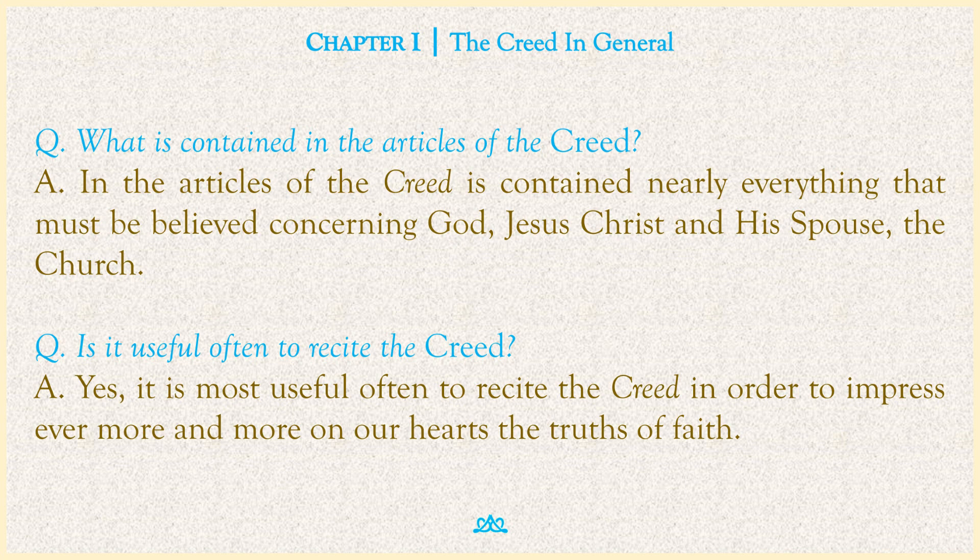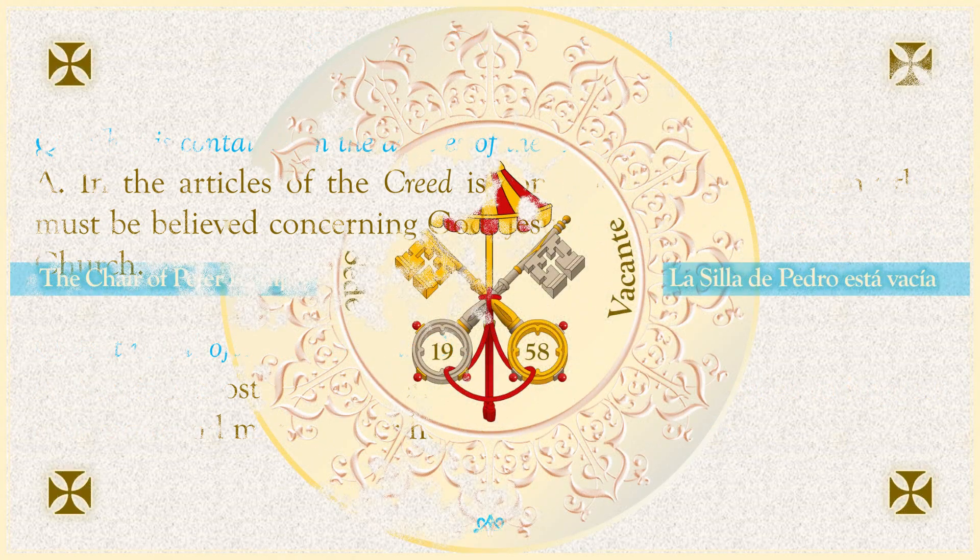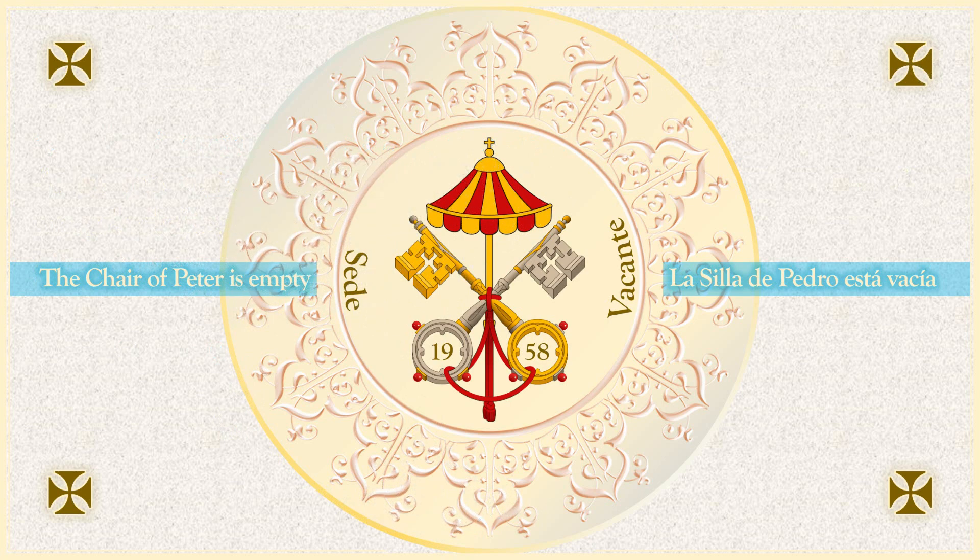What is contained in the Articles of the Creed? In the Articles of the Creed is contained nearly everything that must be believed concerning God, Jesus Christ, and His Spouse, the Church. Is it useful often to recite the Creed? Yes, it is most useful often to recite the Creed in order to impress ever more and more on our hearts the truths of faith. Hail Mary most pure, conceived without sin.